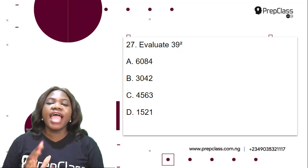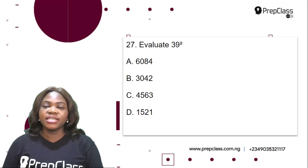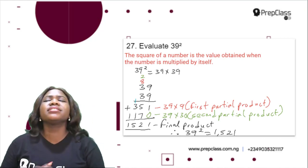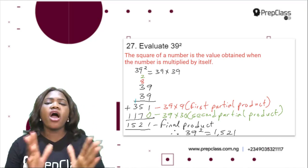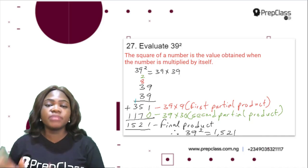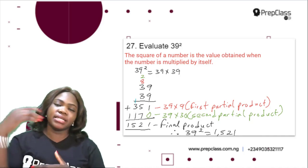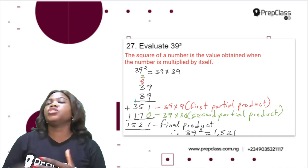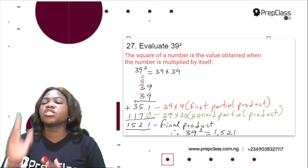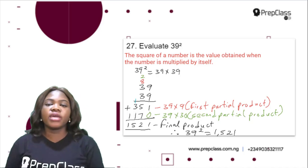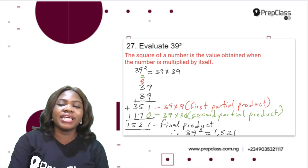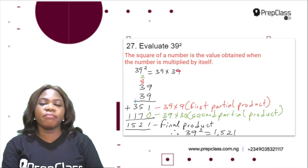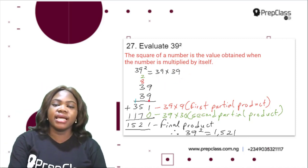Question 27: evaluate 39 squared. The square of a number is the value obtained when the number is multiplied by itself. The square of 2 is 2 times 2, which is 4. The square of 3 is 3 times 3, which is 9. So 39 squared is 39 multiplied by 39.